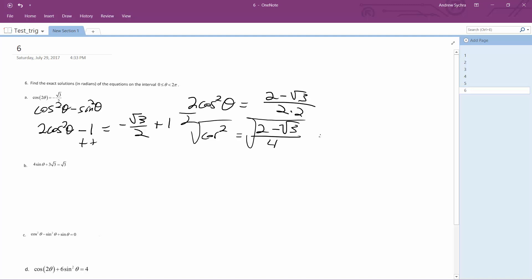We end up with cosine theta is equal to square root of 2 minus root 3 over 2.